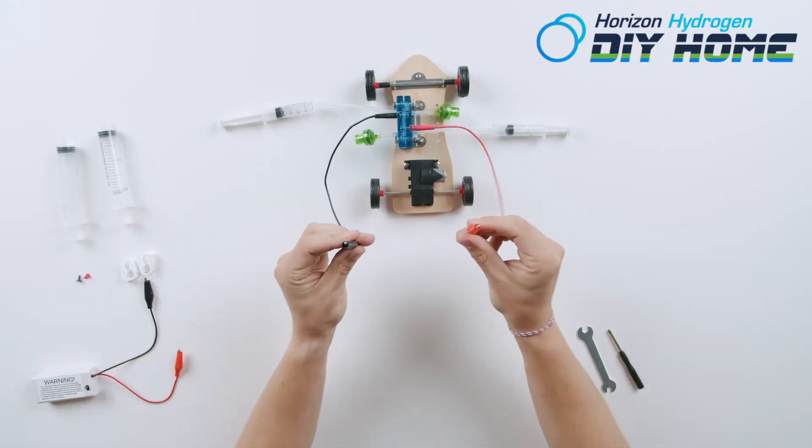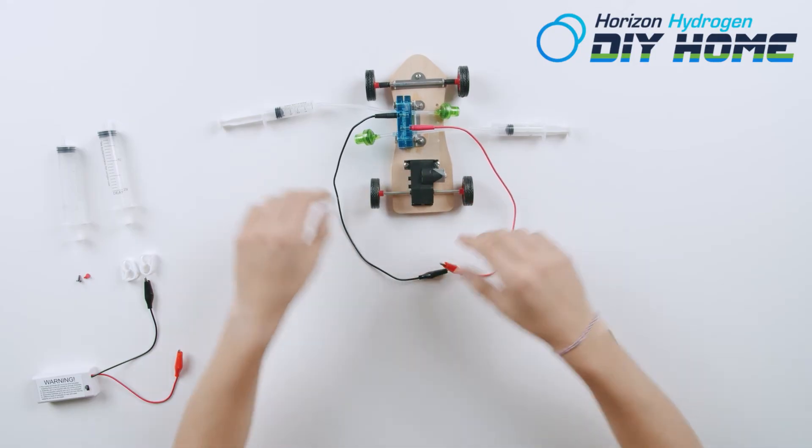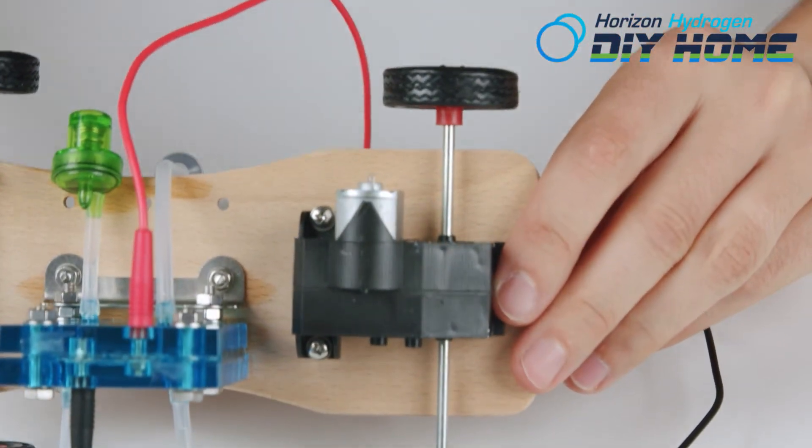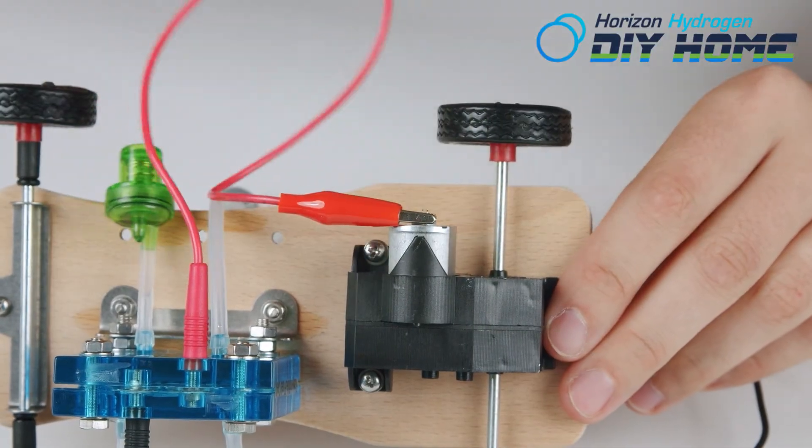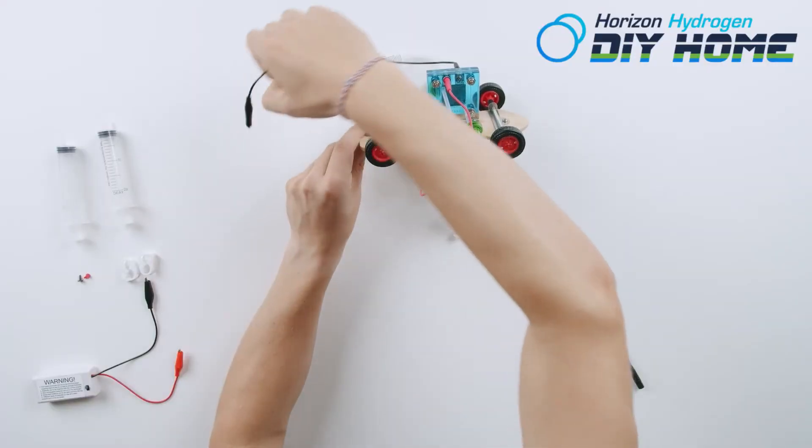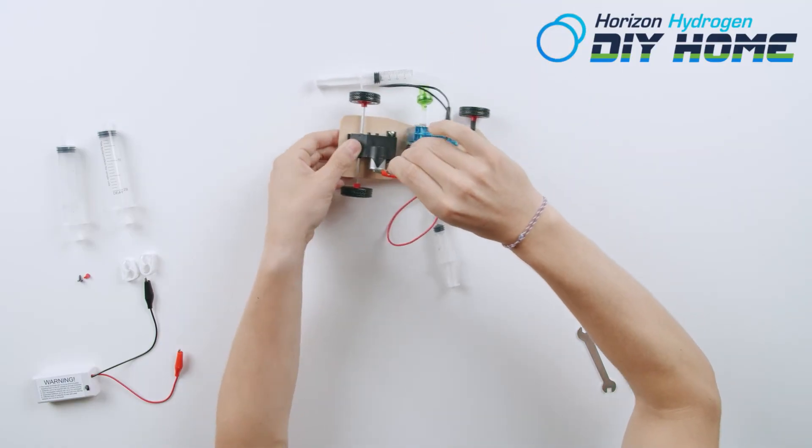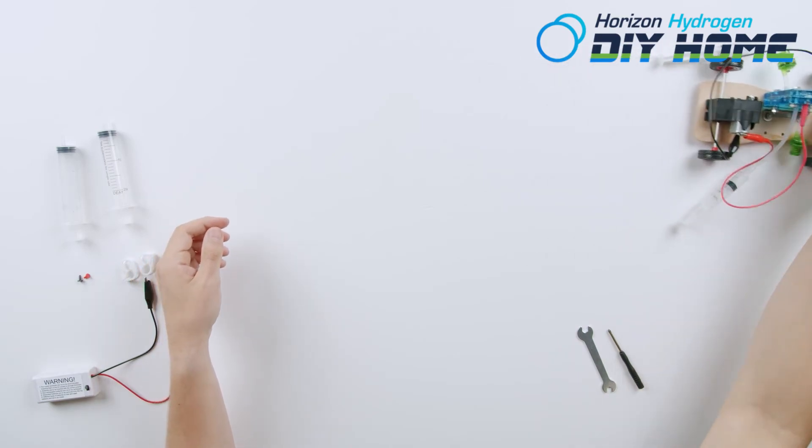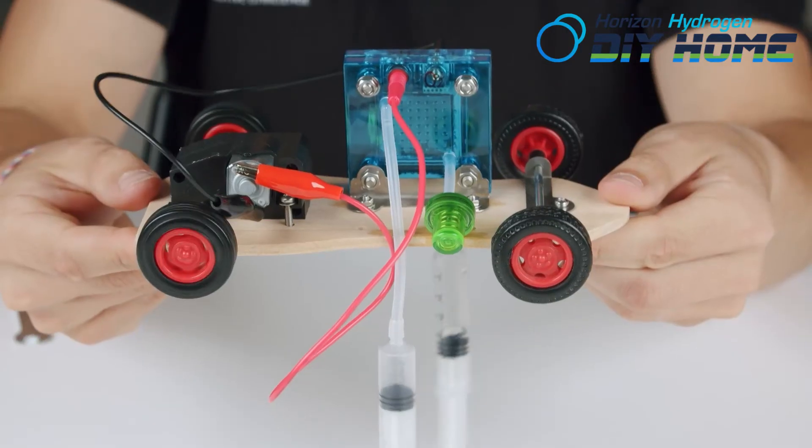Now attach the wire set from the fuel cell to the motor. Do not allow wire sets to touch. If your car is moving in reverse, reverse the motor connections.